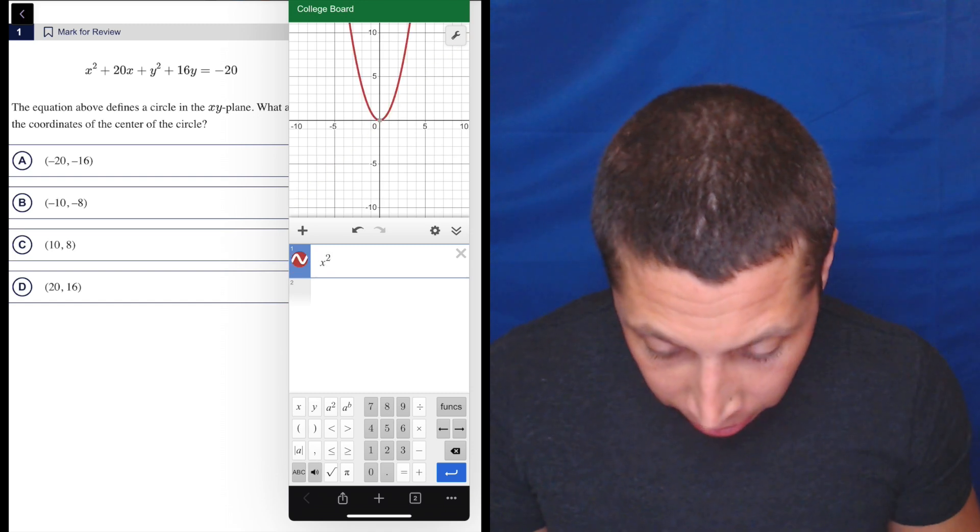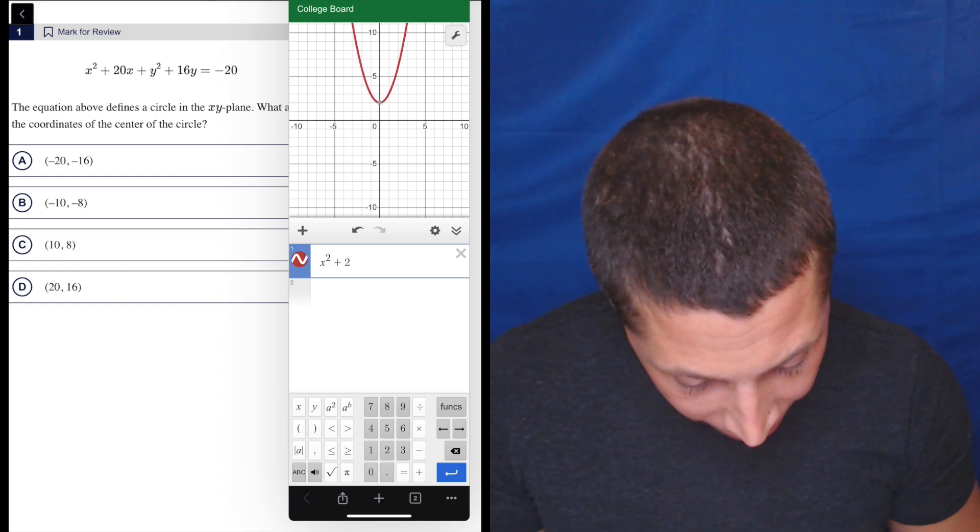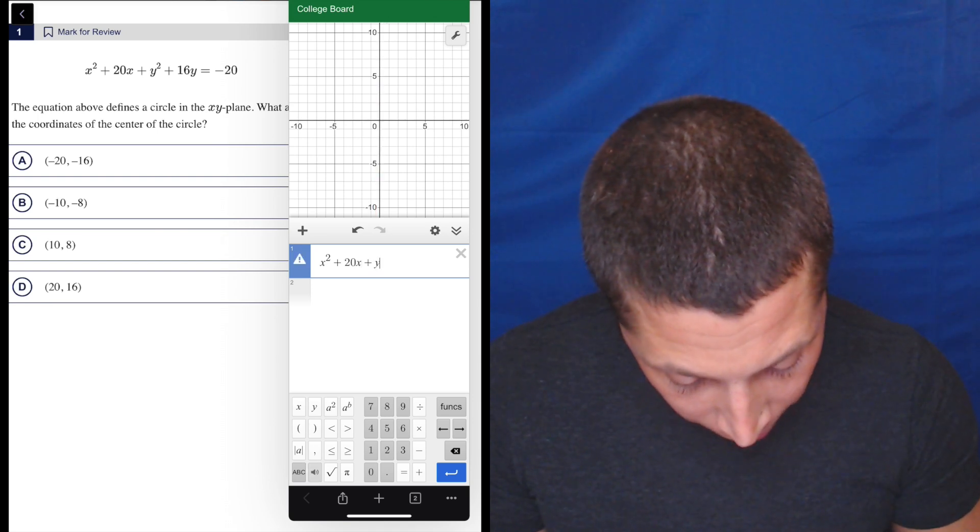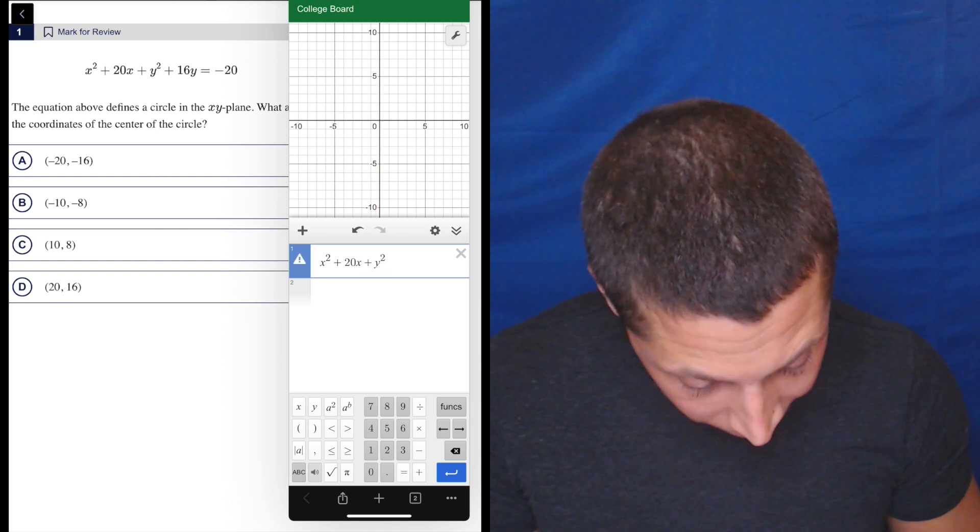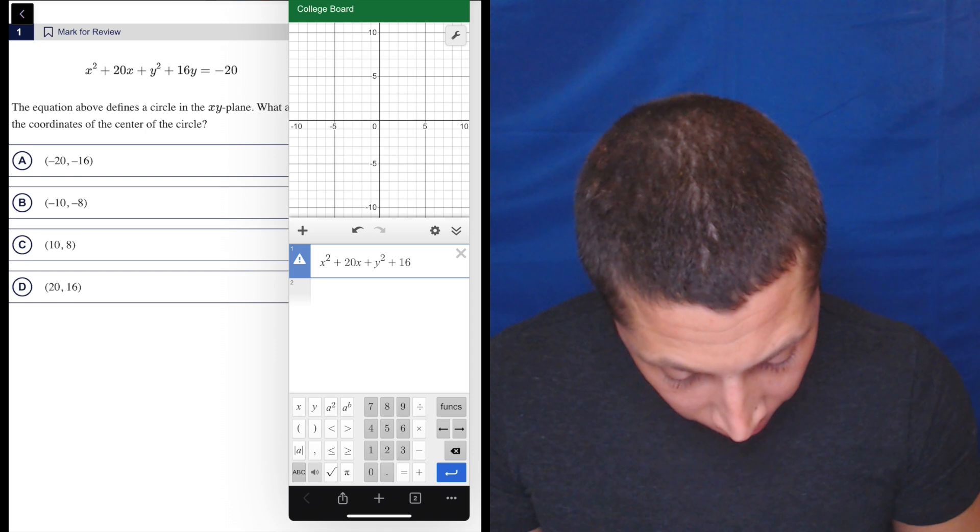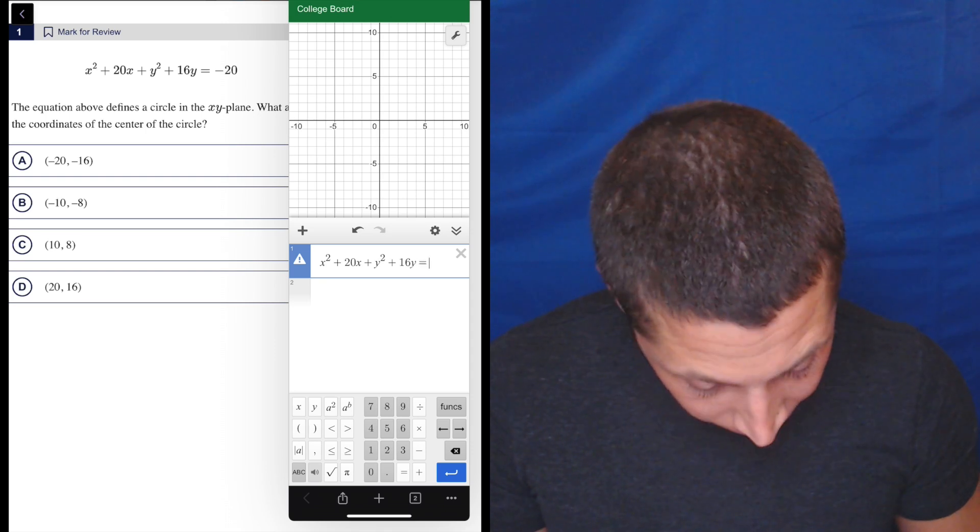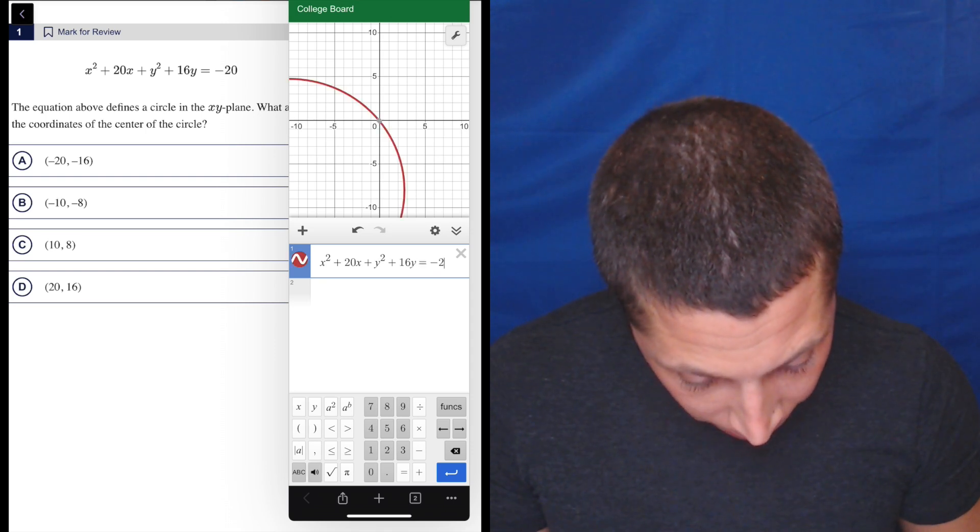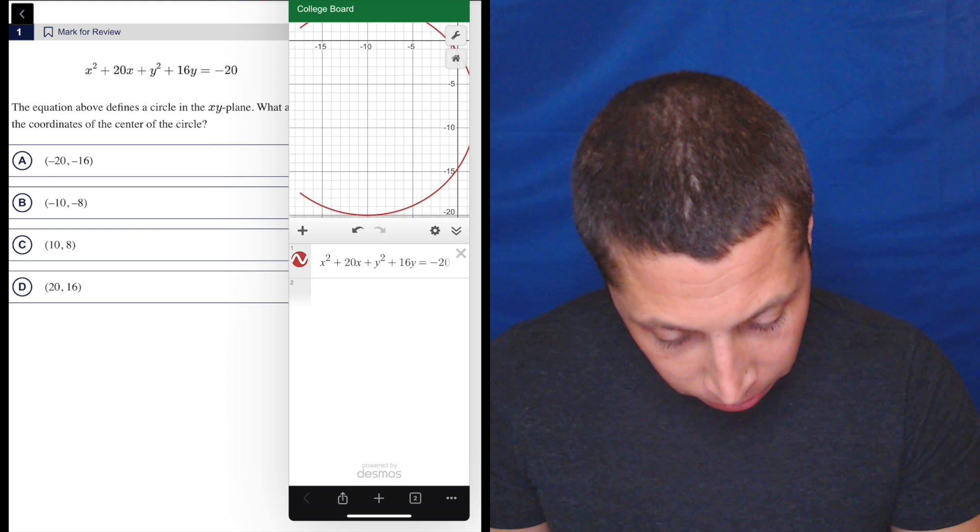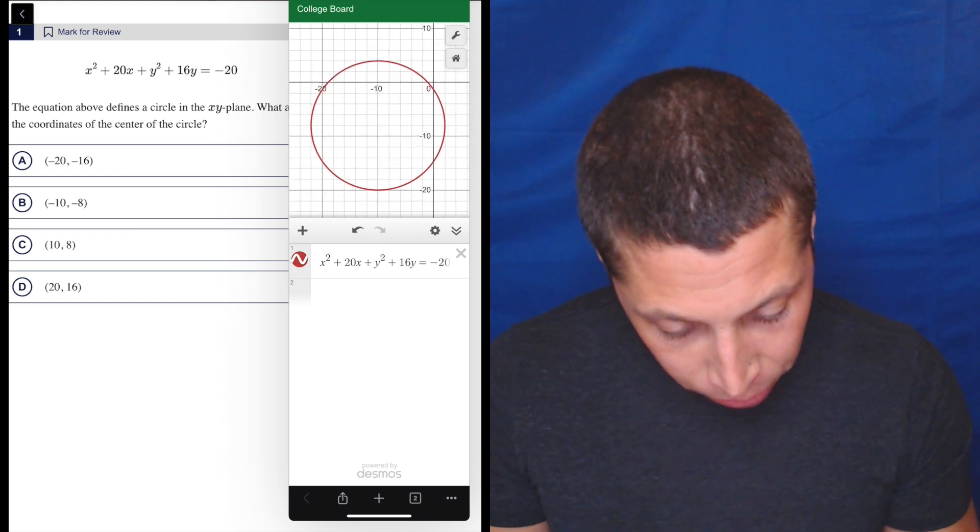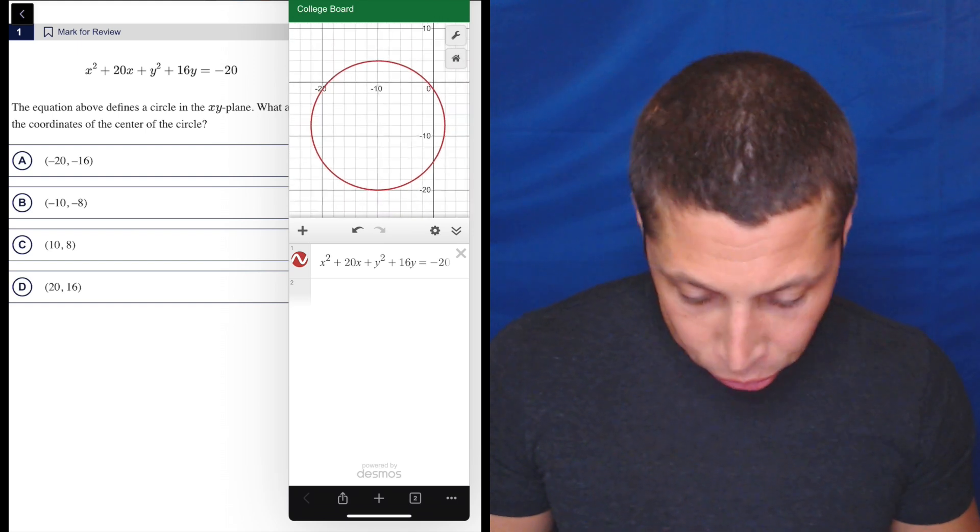So x squared plus 20x plus y squared plus 16y equals negative 20. And there we go. We get a nice little circle. I'm going to scroll around. I'm going to zoom out so I can see it. And just look at the answer choices.